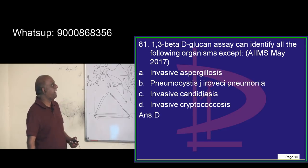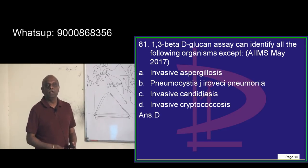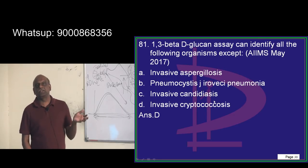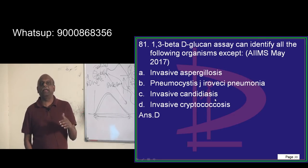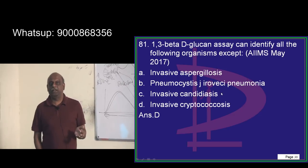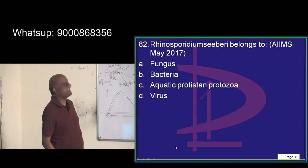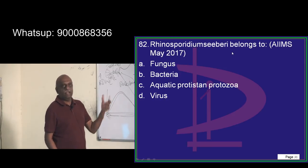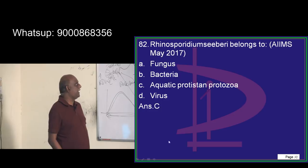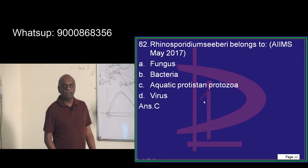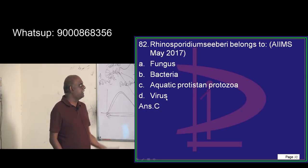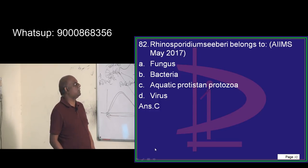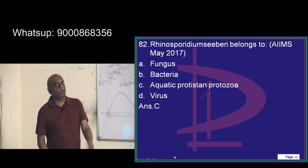What are all the organisms you can identify using the beta-D-glucan assay? Candidiasis, Pneumocystis, and Aspergillosis — all these organisms have 1,3 beta-D-glucan in their cell wall structure, which is used as the assay. Also remember: Rhinosporidium seeberi, which causes rhinosporidiosis, is fundamentally an aquatic protozoa — it is not a fungus but a protozoa.